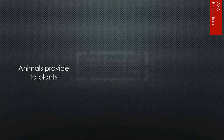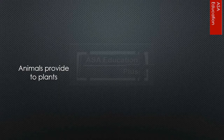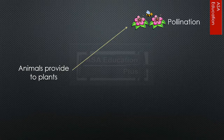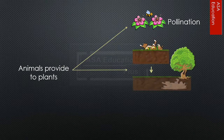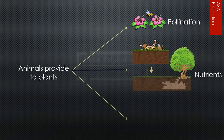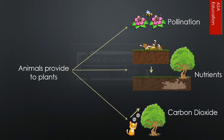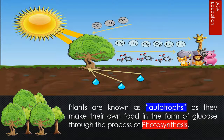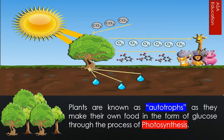In return, animals provide to plants: pollination, nutrients, and carbon dioxide.